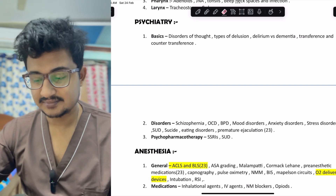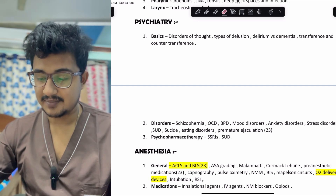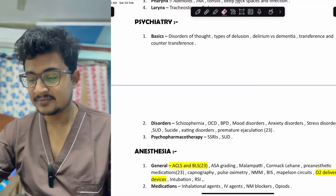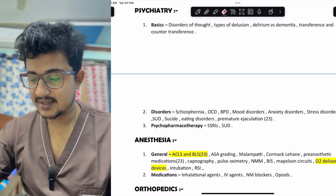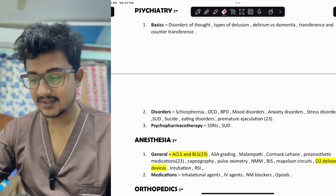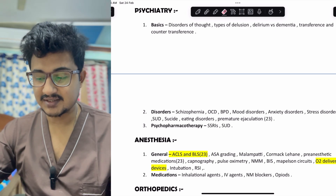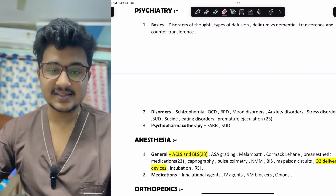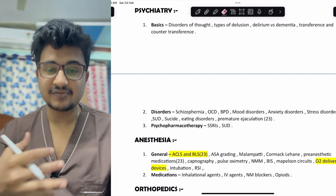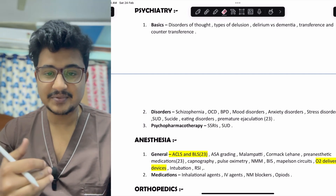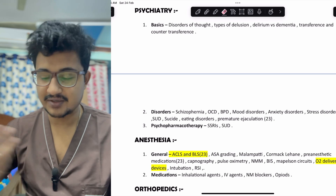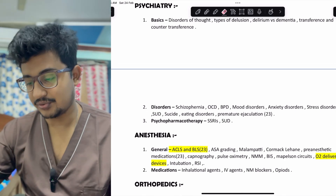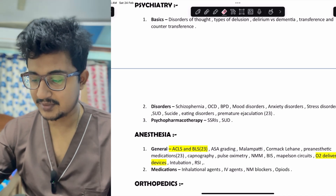In anesthesia, ACLS and BLS are very important and repeatedly asked — the most high-yield topics. Also important are airway grading, Mallampati, Cormack-Lehane classification, pre-anesthetic medications, capnography, and pulse oximetry. Oxygen delivery devices became very important after COVID — the frequency has reduced now, but basic anesthetic medications, including inhalation agents, IV agents, and neuromuscular blockers, should be known.